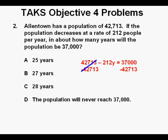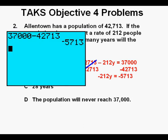42,713 minus 42,713 cancel on the left side of the equation. We bring down what's left, negative 212y equals negative 5,713. Next, we divide both sides of the equation by negative 212. Negative 212 over negative 212 cancel on the left side of the equation.